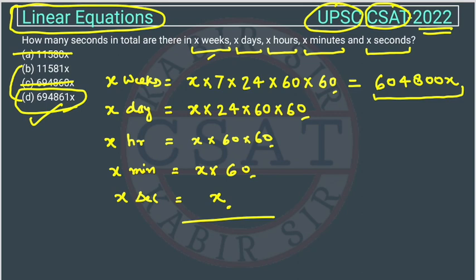Otherwise, you can calculate all these and add them all. Otherwise, you can directly do with options. See, this is an easy question. We have to just convert everything into seconds and we have to add them. So I hope you got this.